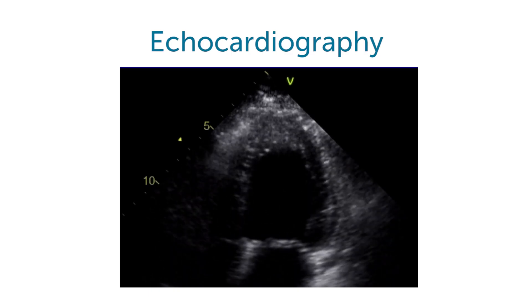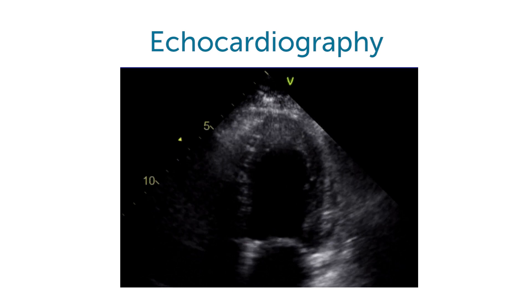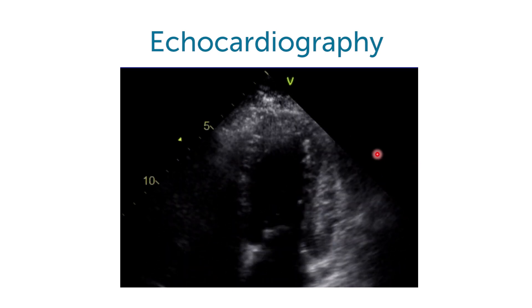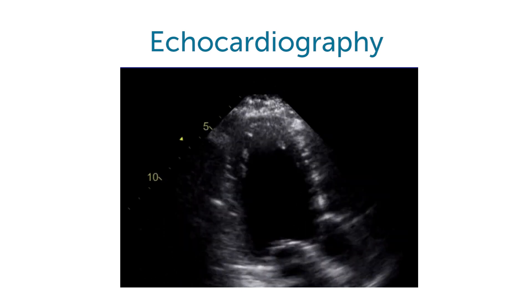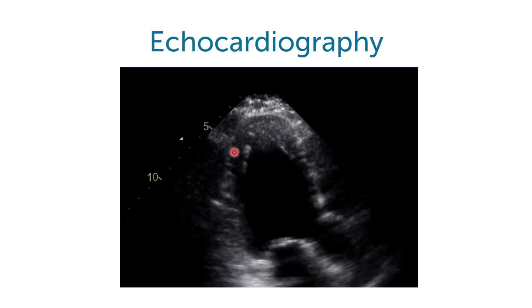But when you looked at the echo, you really wondered if this was a normal heart or not. Obviously there's something very strange happening here in the lateral wall. This wall does not move normally, and when you look at the three-chamber view, very similar things can be observed in the posterolateral wall. Also here we see a sort of abnormal motion.